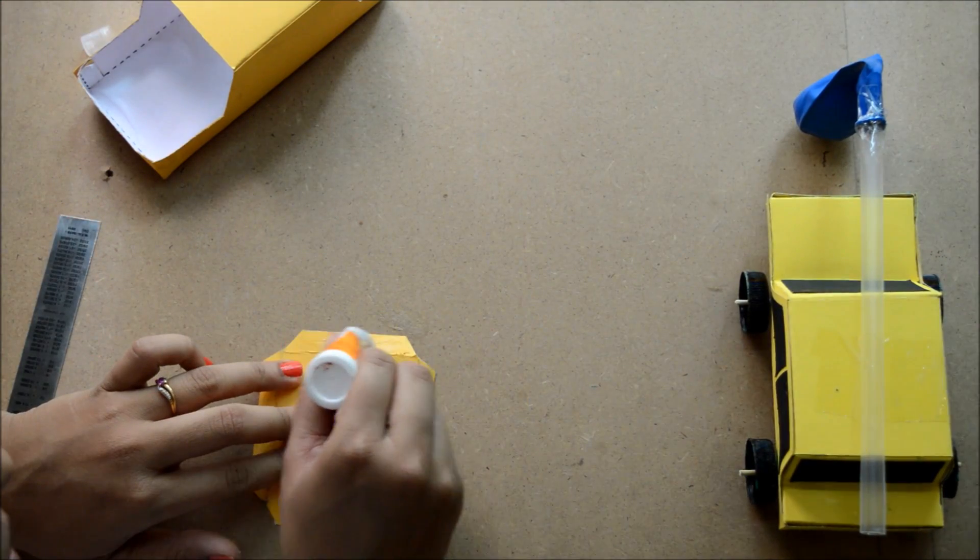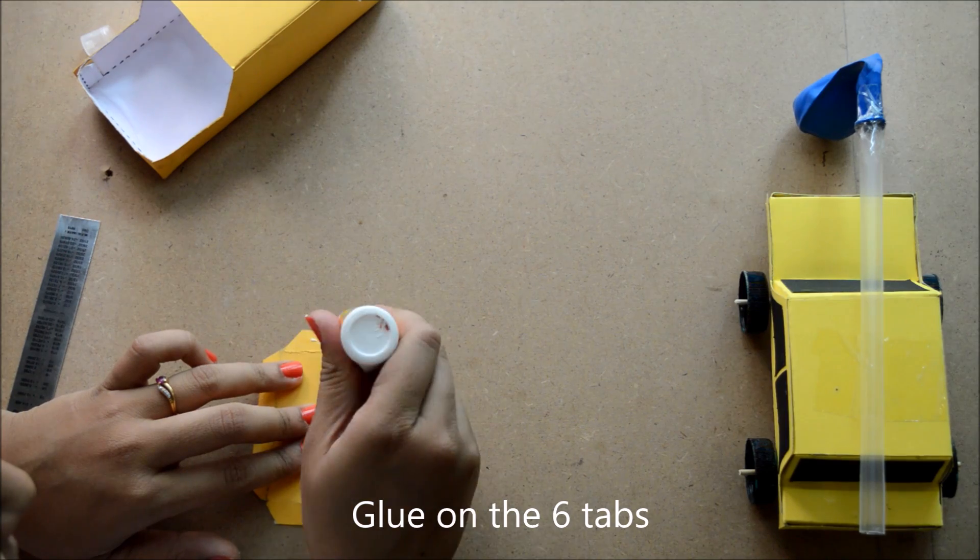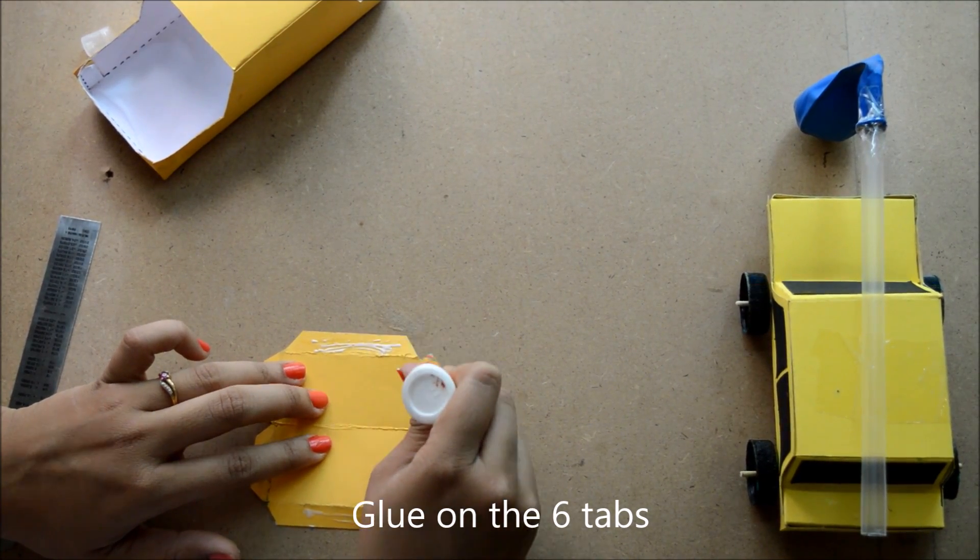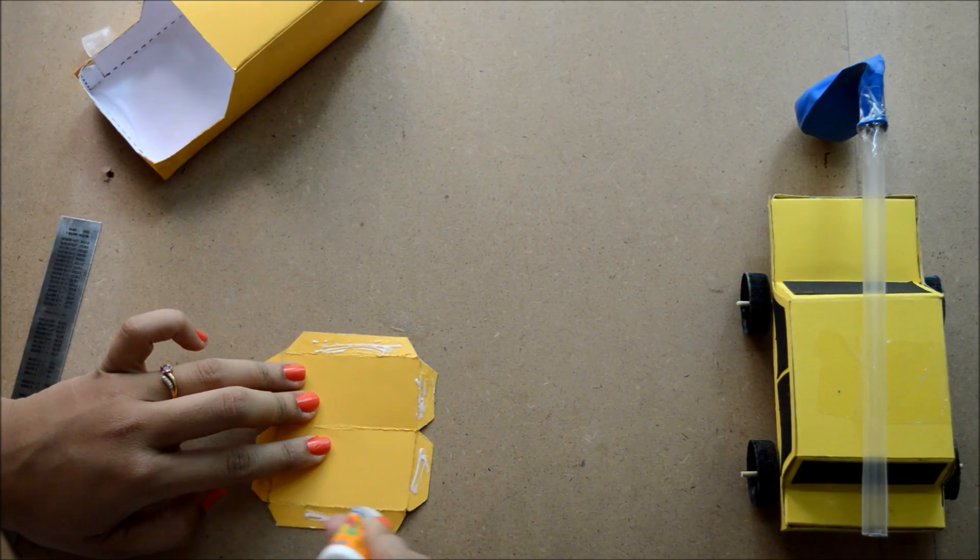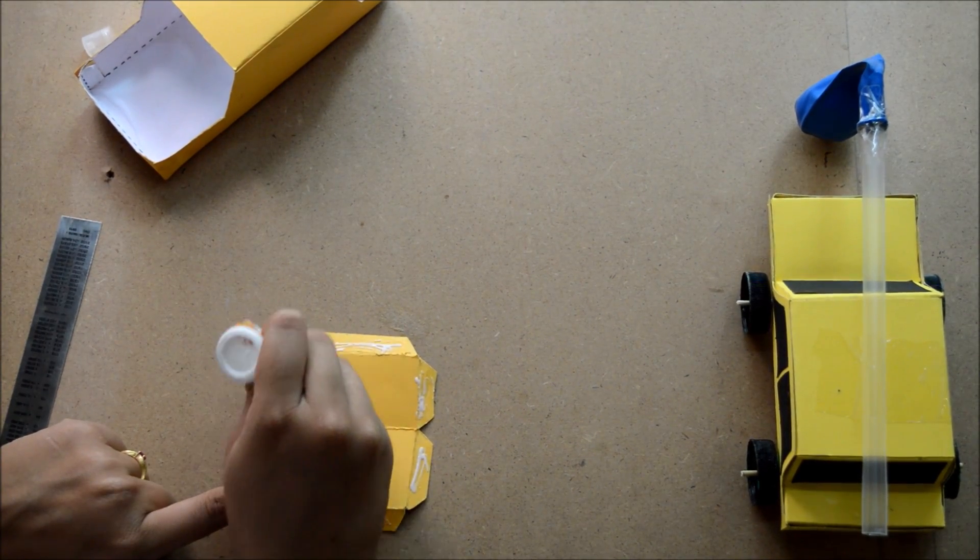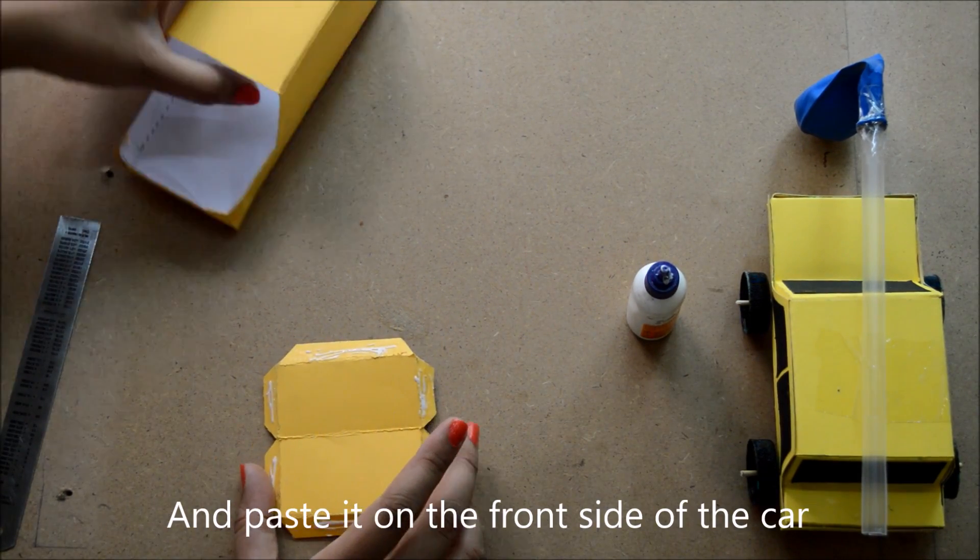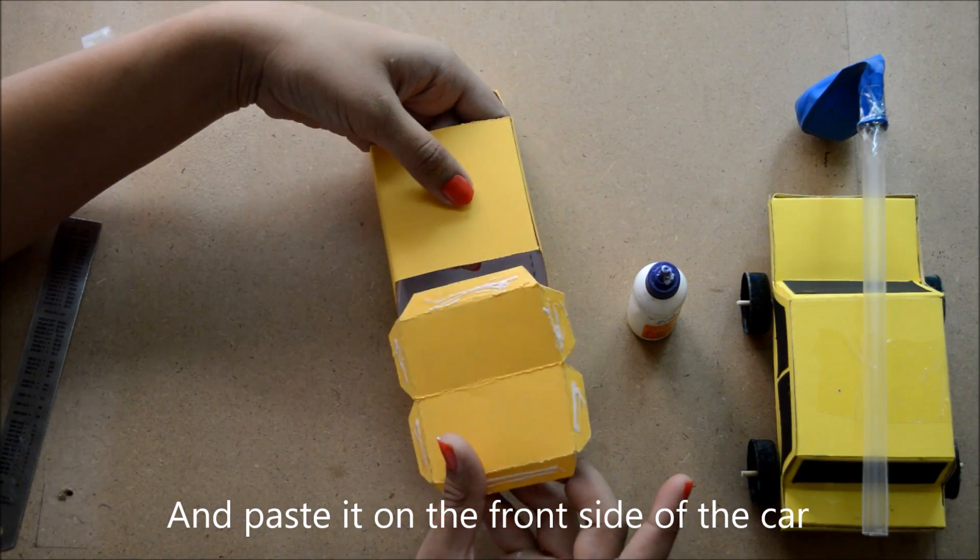Glue on six tabs: one, two, three, four, five, and six, and paste it on the front side of the car.